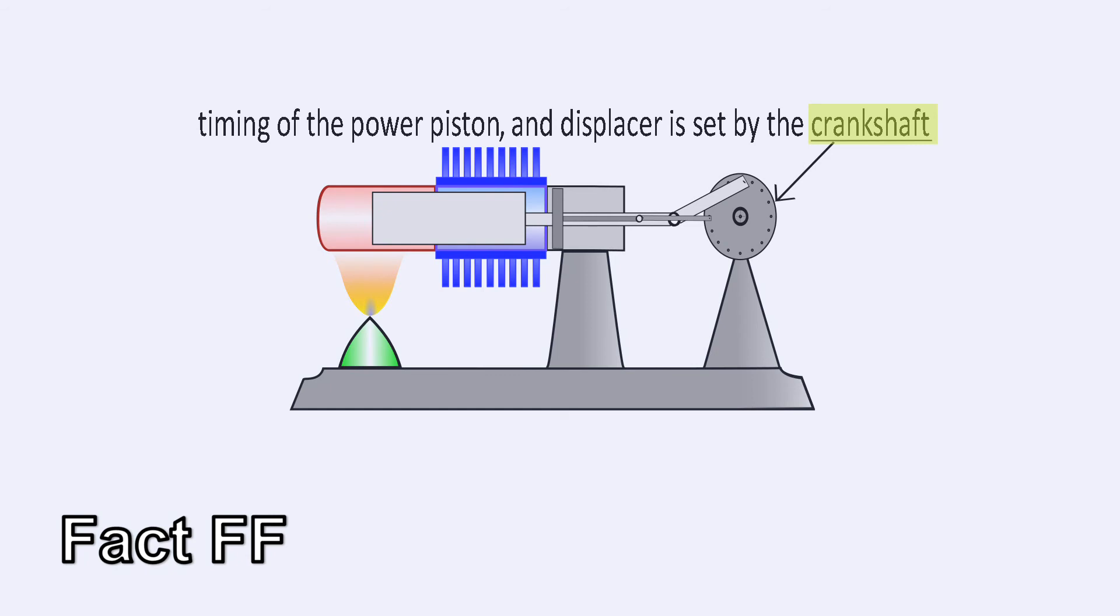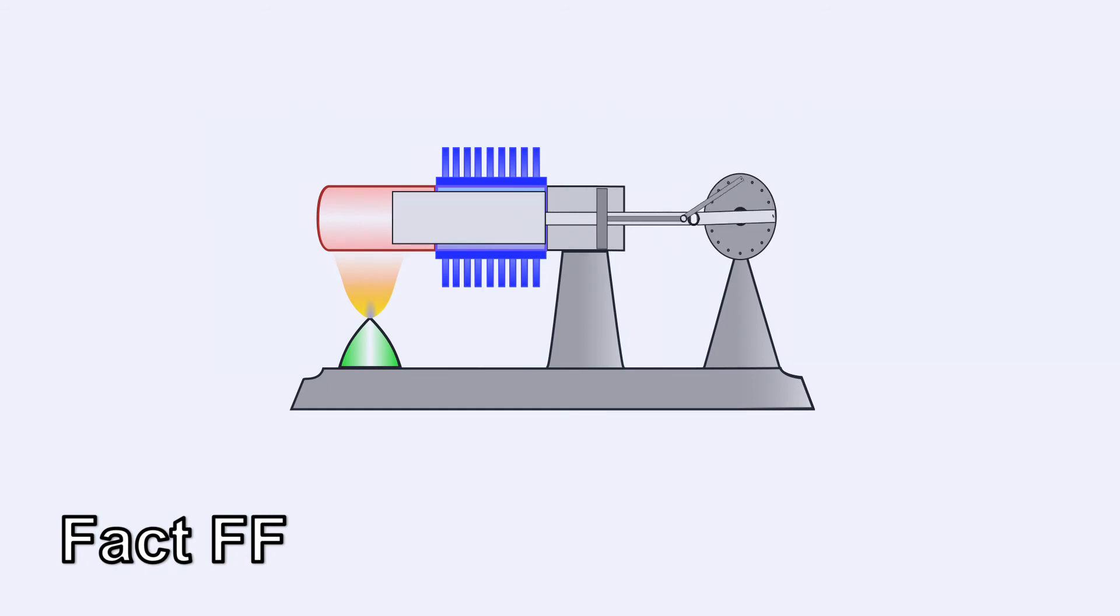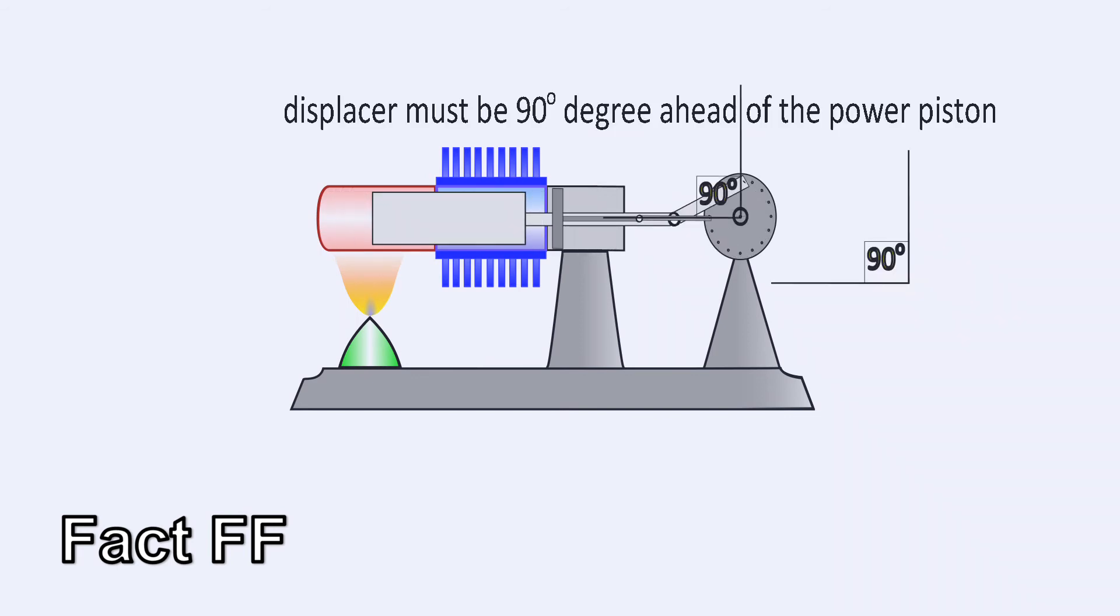The timing of the power piston and displacer is set by the crankshaft. The displacer must be 90 degrees ahead of the power piston.